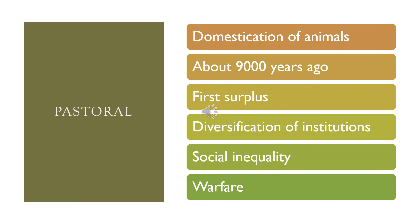Next up is the Pastoral Society. They domesticated animals — not in the same way that the Agricultural Society did. They domesticated animals in the sense that they could breed them, raise them, and use their products, but not put them to work, which is the Agricultural Society.